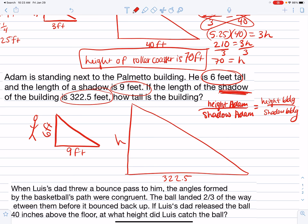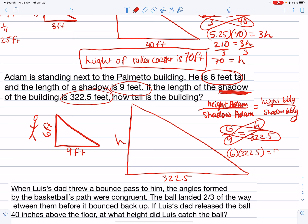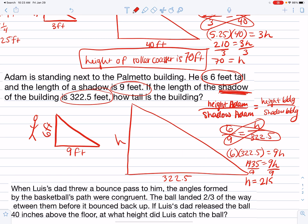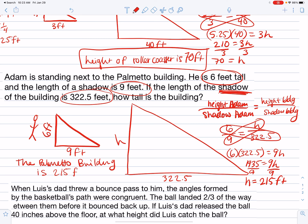The proportion is: height of Adam over shadow of Adam equals height of building over shadow of building. Substituting: 6 over 9 equals h over 322.5. Cross multiplying: 6 times 322.5 equals 9 times h, which gives 1935 equals 9h, so h equals 215. We write our sentence: the Palmetto building is 215 feet tall.